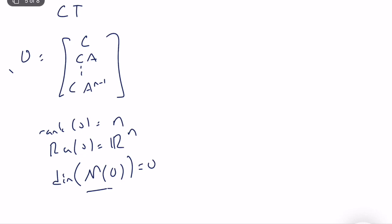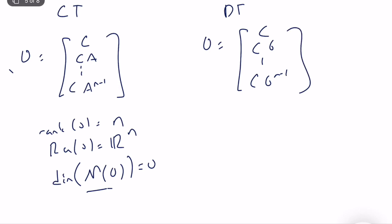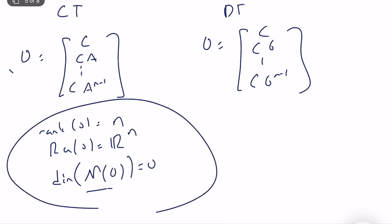For discrete time systems, we construct the observability matrix as C, CG, CG^2, ..., CG^(n-1) — it's exactly the same structure, only using the system matrix G instead of A. We look at the same conditions to test observability. There is no ambiguity or difference between continuous and discrete time systems here. If the system is fully observable, it's fully observable. There's a related concept called detectability, but it's out of scope for this course.